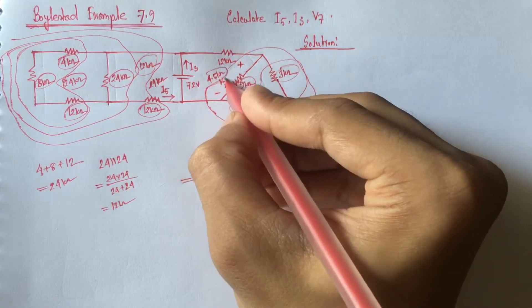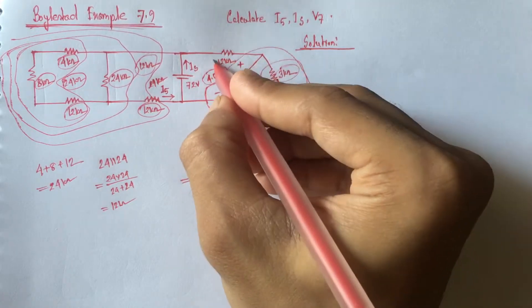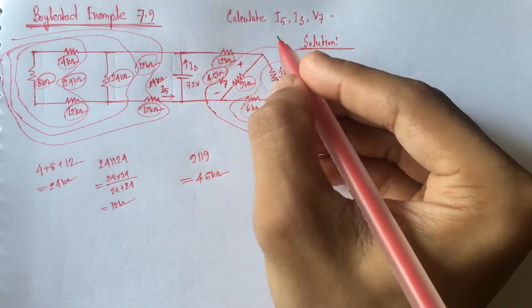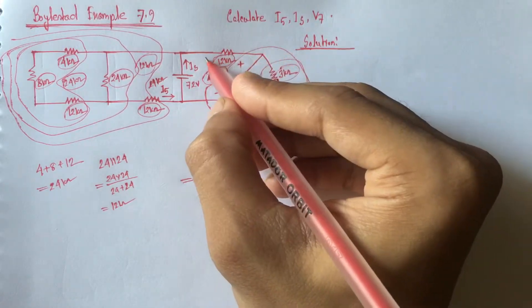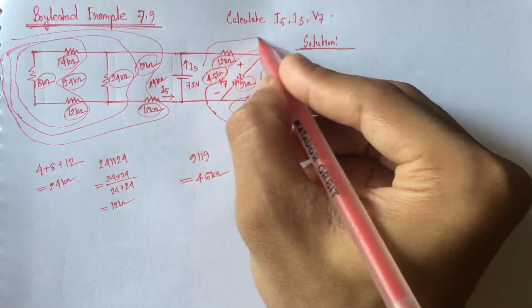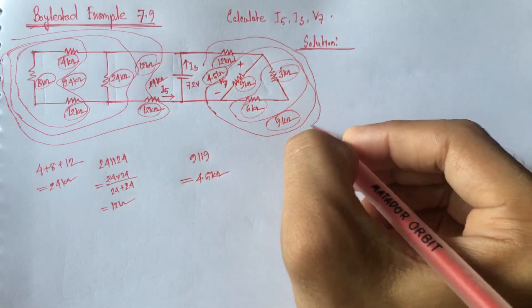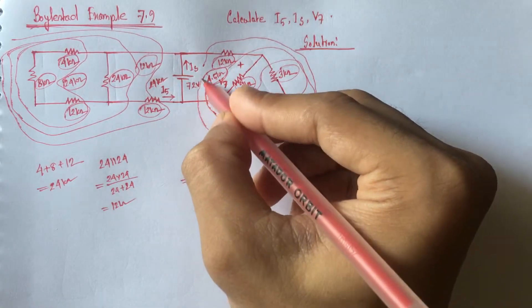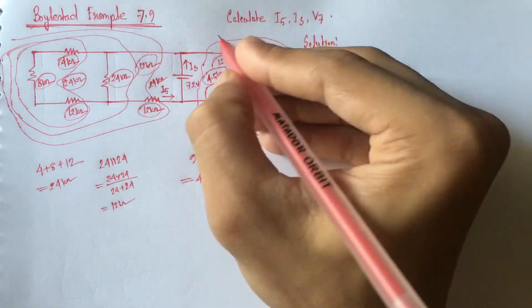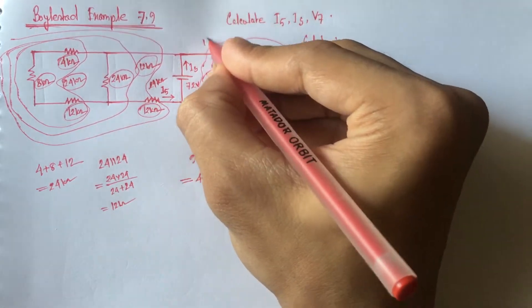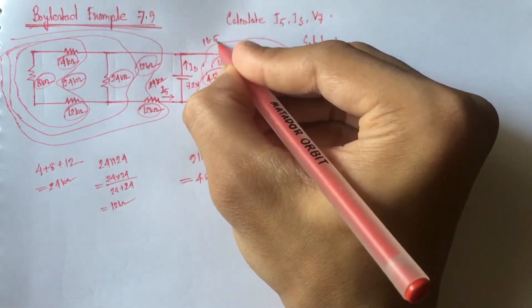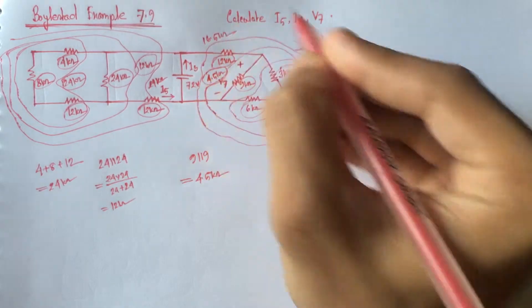Now this 4.5 Kiloohm and this 12 Kiloohm are in series. So if we take the equivalent of this whole part, it will be 16.5 Kiloohm.